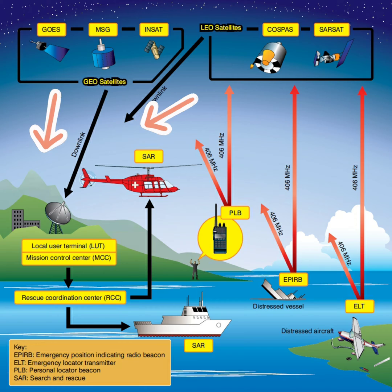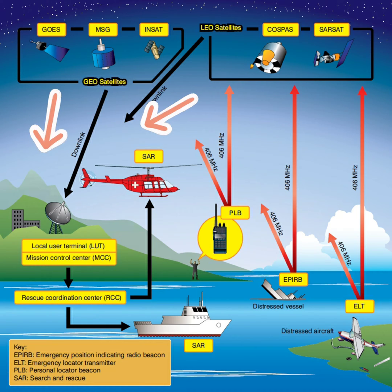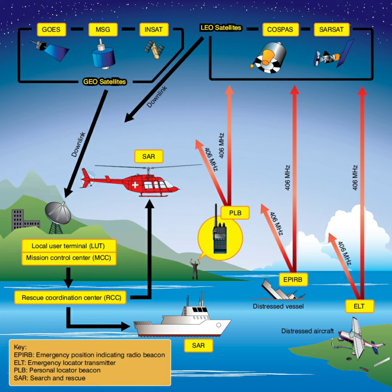The satellite sends this information down to the ground unit known as the Local User Terminal. From there, the information is passed on to the Mission Control Center, where it is collected, monitored, sorted, and stored.